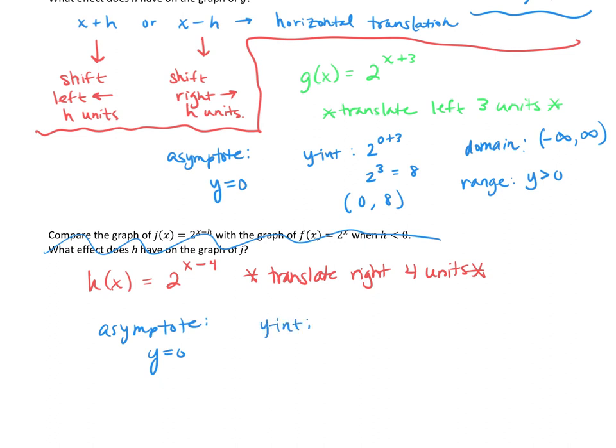Our y-intercept is going to change if our graph shifts to the right 4 units. So let's just find it. We have 2 to the 0 minus 4. Again, any y-intercept you can find by plugging in a 0 for x. So 2 to the negative 4. When we have negative exponents, we move it down. That's 1 over 2 to the 4th, which is 1 over 16. So our y-intercept is the ordered pair 0, 1 sixteenth.